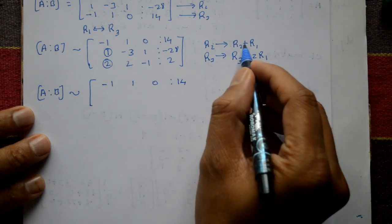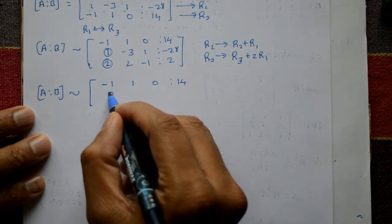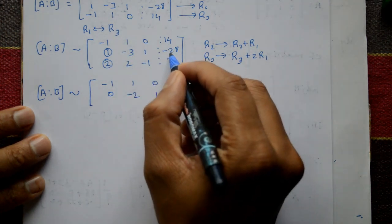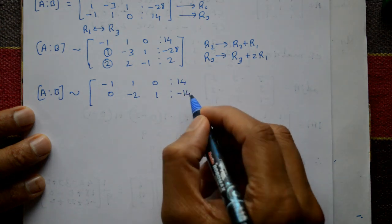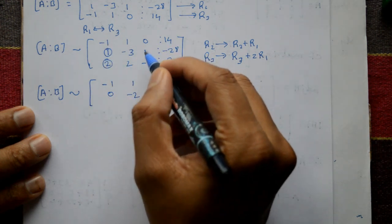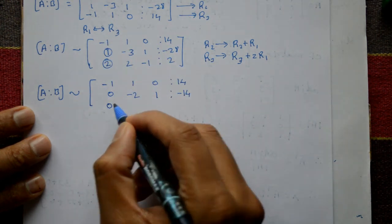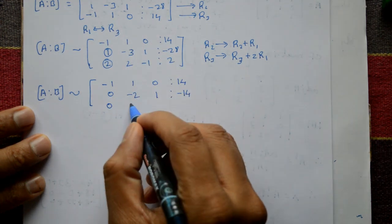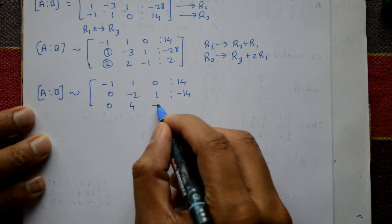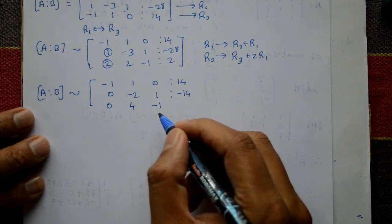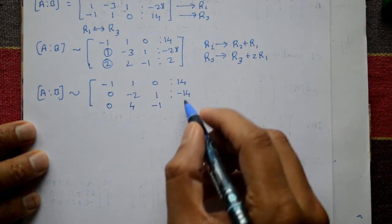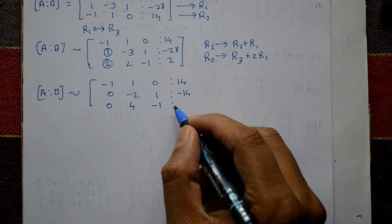Second row R2 plus R1: the first element becomes 0; minus 3 plus 1 gives minus 2; 1 plus 0 gives 1; and minus 28 plus 14 gives minus 14. For R3 equals R3 plus 2 times R1: minus 2 plus 2 gives 0; 2 plus 2 gives 4; 2 times 0 minus 1 gives minus 1; and 2 times 14 gives 28, plus 2 is 30.